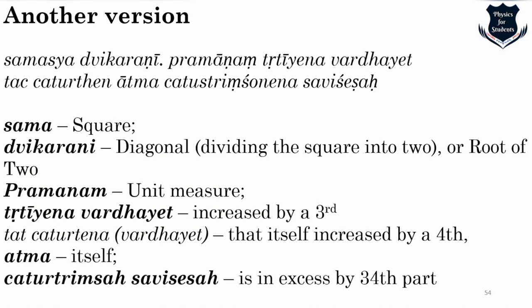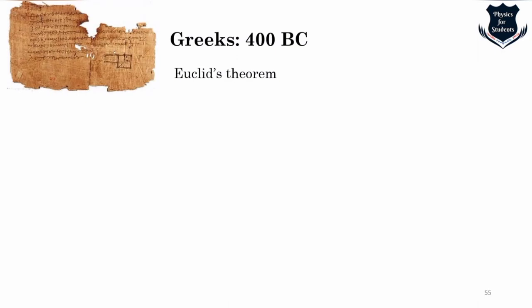These difficult Sanskrit shlokas, predating Pythagoras, taught geometry and the value of √2, but remained hidden because only scholars knowing Sanskrit could decipher them. Baudhayana further discovered the Pythagorean theorem, the circle from the square, and the value of π. The Greeks around 400 BC established that square roots of positive whole numbers that are not perfect squares are always irrational — Euclid's theorem. The particular case of √2 dates back even earlier to the Pythagoreans, as the diagonal of a unit square.